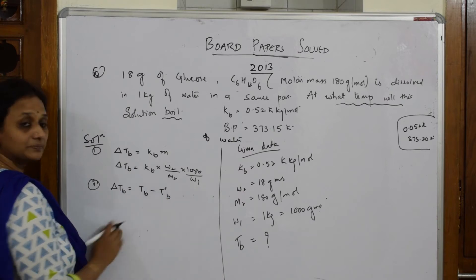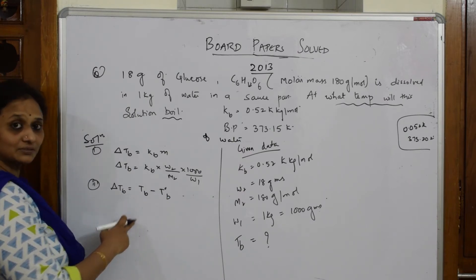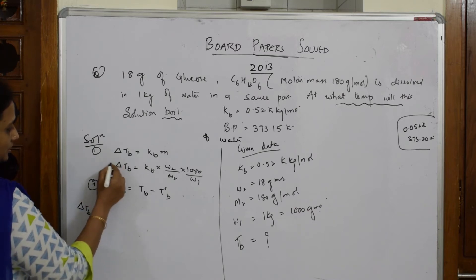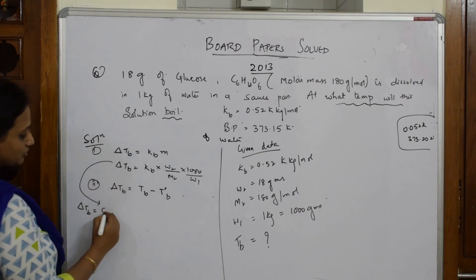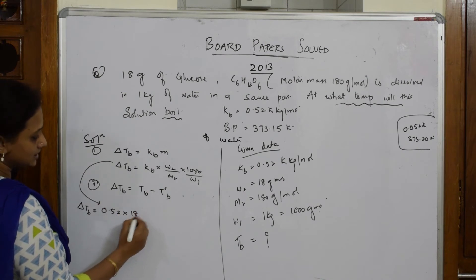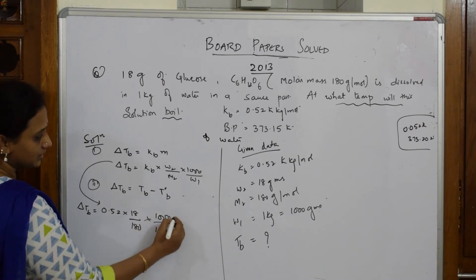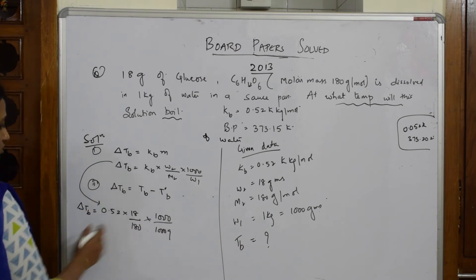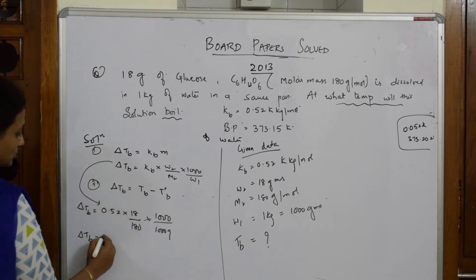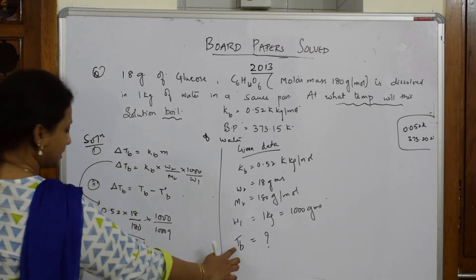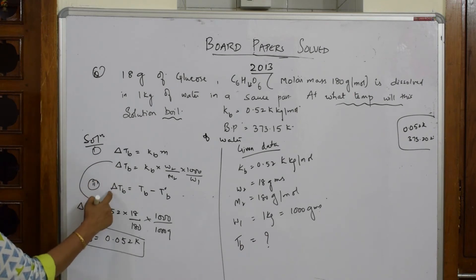That means I have two formulas. One more formula is: delta Tb = Tb - T0b. This is your formula where we have studied elevation in boiling point. Let's start with the numerical. Delta Tb = kb × W2/(M2) × (1000/W1). When I solve this, I get delta Tb = 0.052 K.